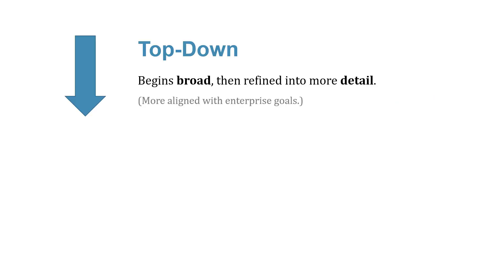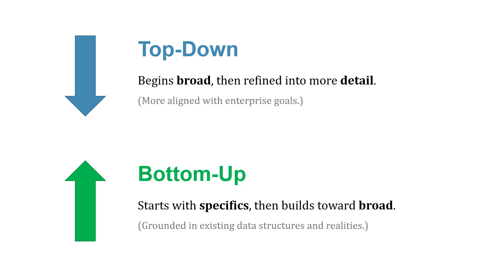There are a couple of approaches as we move through modeling. We could use a top-down approach, where we begin broad — thinking about big business goals, like feeding my family in the garden example — and then refine down to more detail. This approach is more aligned with enterprise goals. But there may be cases where a bottom-up approach makes more sense, starting with specifics and building toward something broader — for example, when we have existing data structures to work around and build beyond, while still hopefully achieving the business goals we've set out.